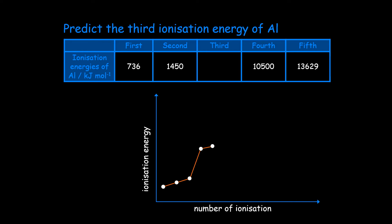Now if we do a similar thing for aluminium, we see that the third electron is in the same energy level as the first and second. Now the first and second is 736 and 1450. So the difference between them is 717.